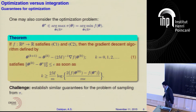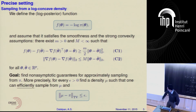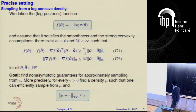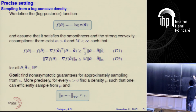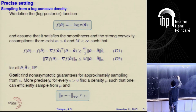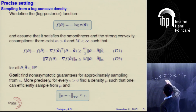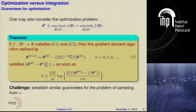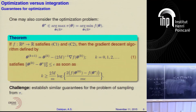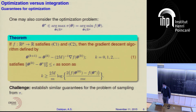The little m here is the constant of strong convexity. We assume the function is strongly convex with constant little m and smooth with constant capital M. To keep a simple picture in mind: m times the identity matrix is smaller than the Hessian of f of x, which is smaller than capital M times the identity matrix, for every x in dimension P.